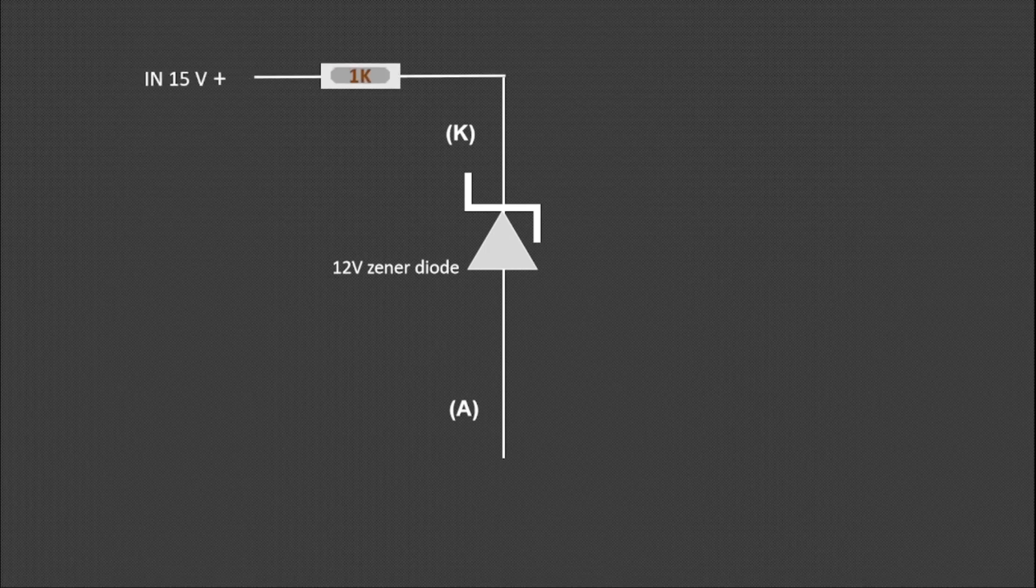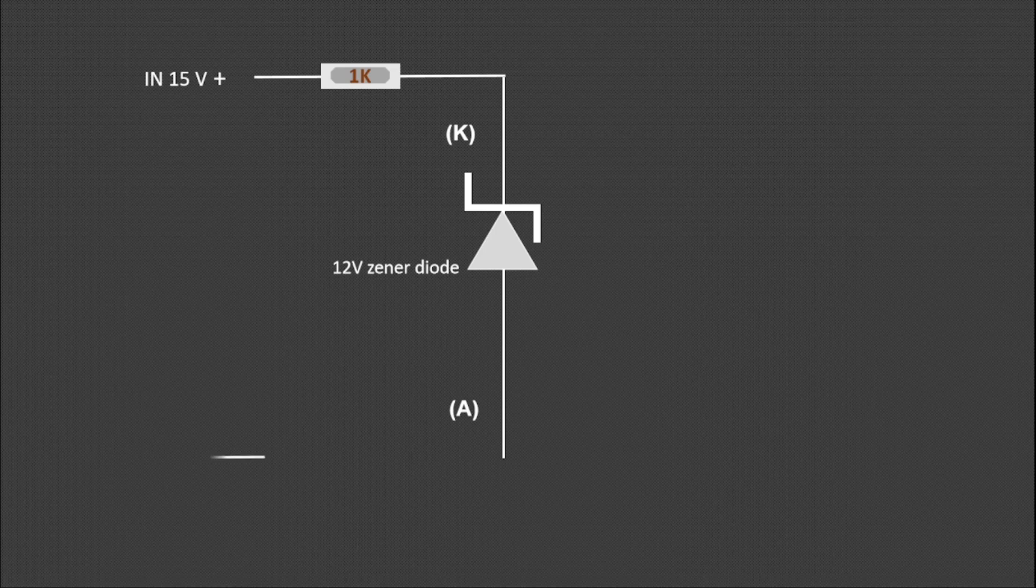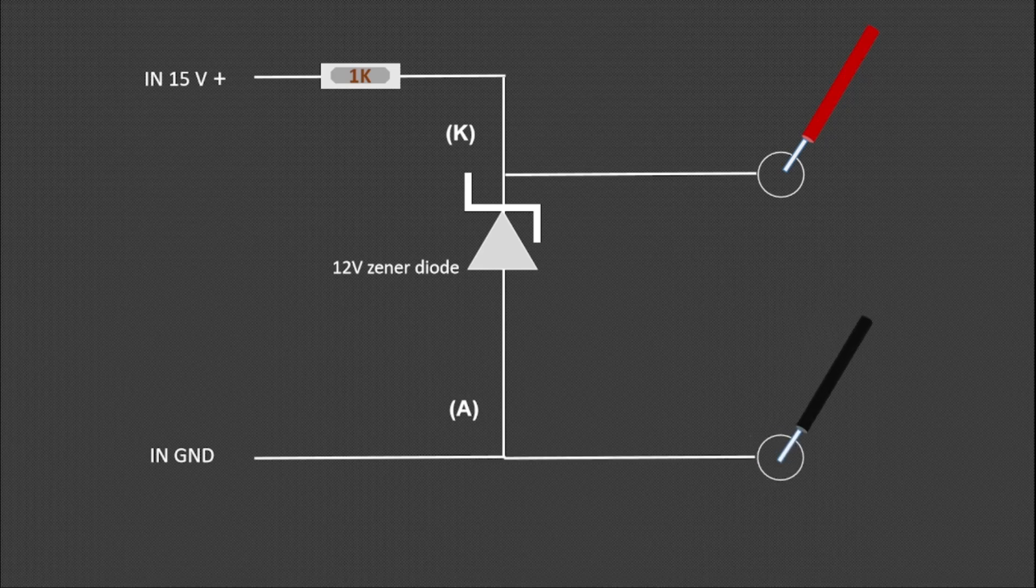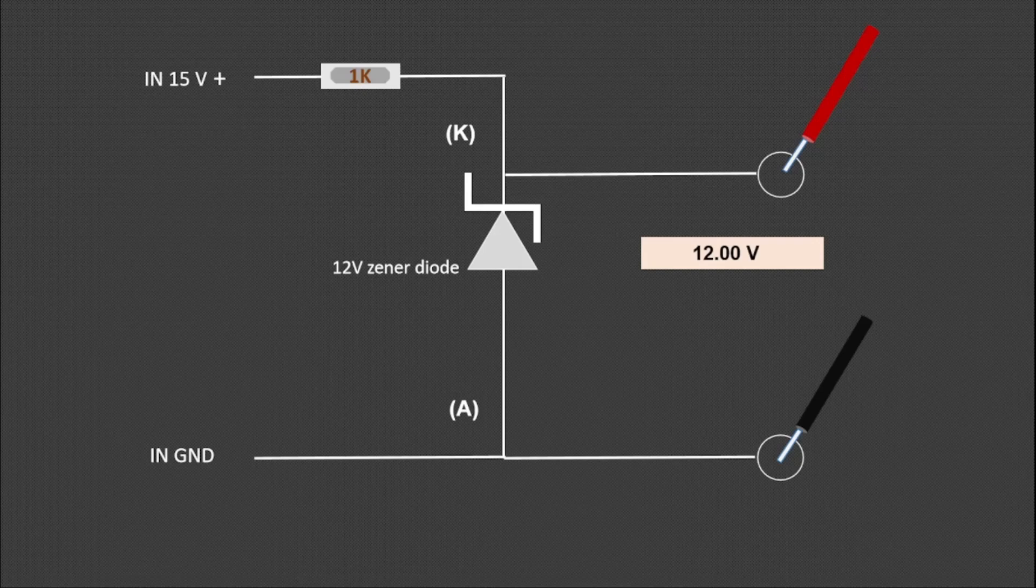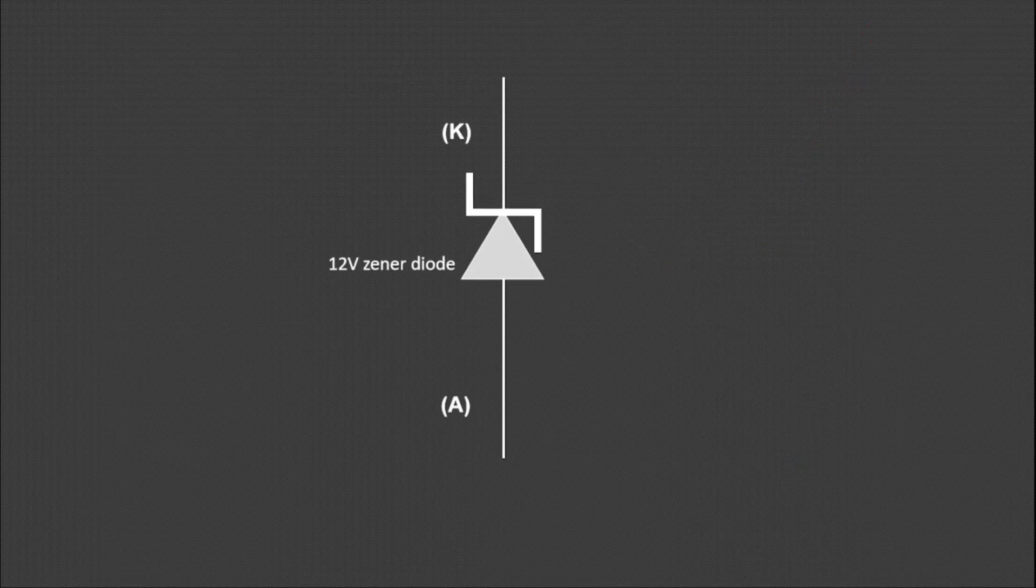We apply 15 volts to this Zener diode to see what happens in it. Its anode will remain grounded as it is. Let's check the voltage of the cathode and anode to see how many volts we should get here. There you will find 12 volts.